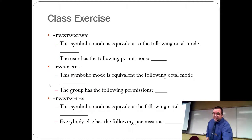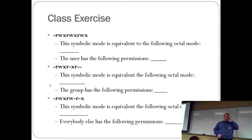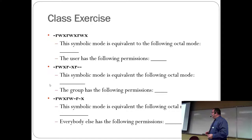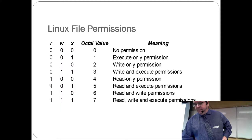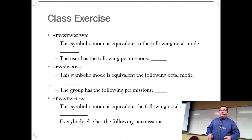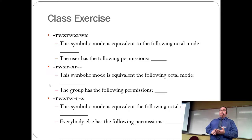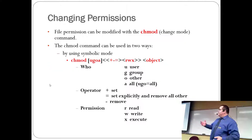Just so you know — this chunk here is 7, 5, 4. When dealing with numbers, go back to that chart with the values. The last example is 7, 5, 5 — where everybody else has the permission of 5, which is read and execute. That's essentially how the permission notation breaks down.